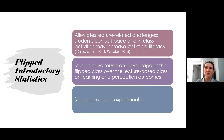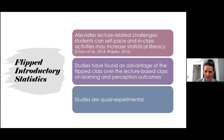But students still self-select into their class of preference, so it's difficult to draw any causal conclusions about the flipped class format. Also, many studies have small classroom sizes, so they might be underpowered.